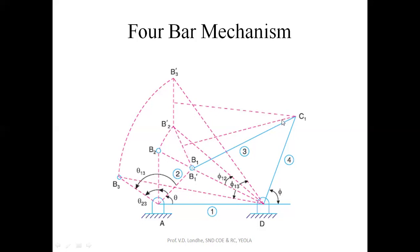The perpendicular bisector of B1 B2-dash and the perpendicular bisector of B2-dash B3-dash will intersect at a point, giving us point C1. C1 indicates the first position of the coupler point C. Then join B1 to C1 and C1 to D. This gives us the output angle made by the rocker link with reference to the fixed link. In this way we complete the graphical inversion method analysis for the four-bar chain mechanism.